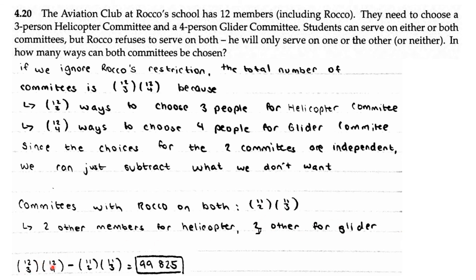So we do C(12,3) times C(12,4) minus C(11,2) times C(11,3) — subtracting the cases when Rocco is on both committees — giving a total of 99,825 ways.